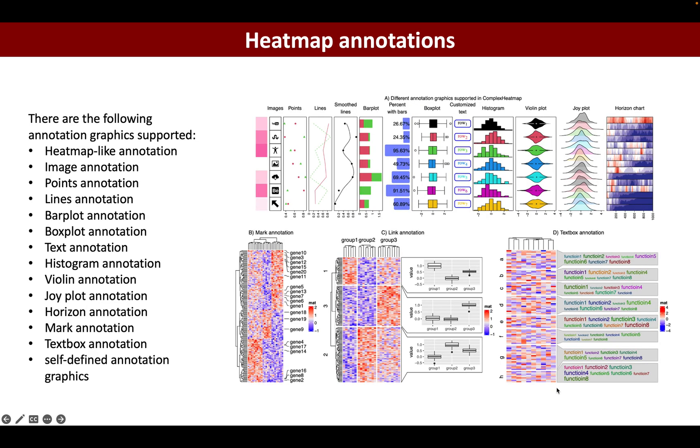ComplexHeatmap supports a lot of annotation graphics and self-defined annotation graphics. These figures show many different annotation graphics supported including heatmap-like annotation, image annotation, points annotation, and rather complicated annotations like the Mark annotation which links a subset of rows or columns of the heatmap to text labels.